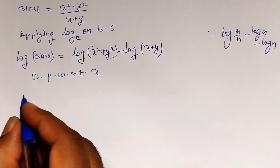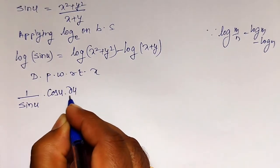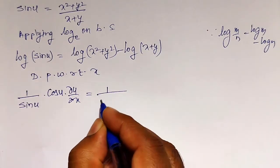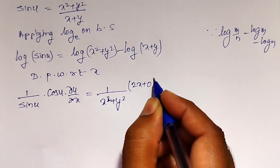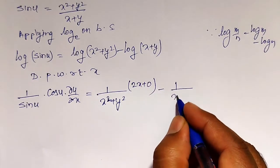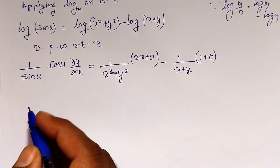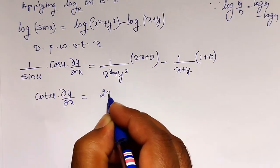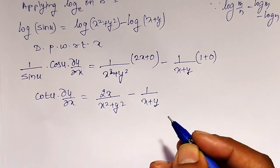Now differentiating partially with respect to x, I get 1/sin(u) · cos(u) · ∂u/∂x on the left side by implicit differentiation. On the right side, the derivative of log(x² + y²) is 1/(x² + y²) · 2x (since ∂y/∂x = 0), minus the derivative of log(x + y) which is 1/(x + y) · 1. Simplifying, cos(u)/sin(u) = cot(u), so: cot(u) · ∂u/∂x = 2x/(x² + y²) − 1/(x + y).